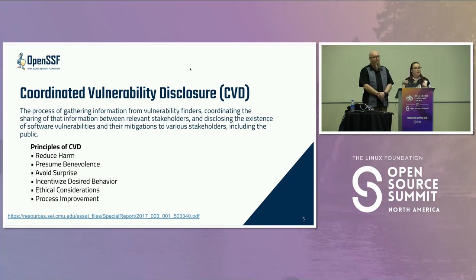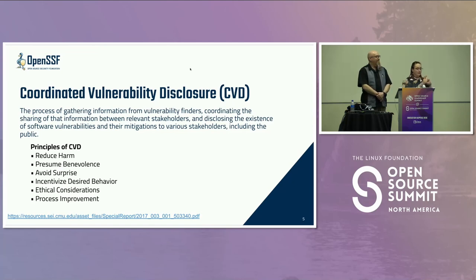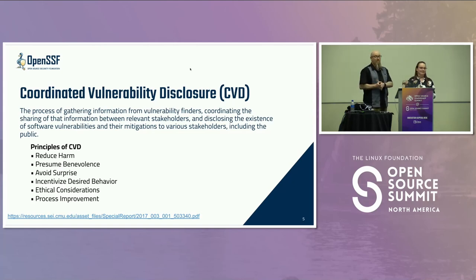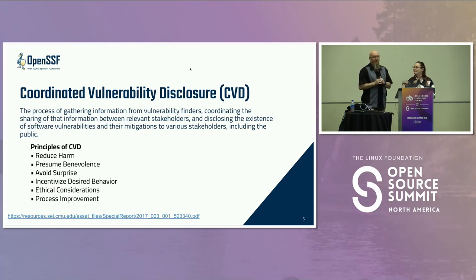The biggest goal is reducing harm throughout that whole process. You want to presume benevolence whenever possible — assume the best, trust by default. Try to avoid surprising other stakeholders in that process. You want to incentivize the other party to do the behavior you're desiring from them. There's also a number of ethical considerations and process improvements. If you're old like me, you might have heard the term 'responsible disclosure' — this is how this process used to be referred to, but it's dropped out of favor because of the implications of the word 'responsible.' It became kind of a value judgment, and we want to focus on the coordination aspect. So today it's called CVD.